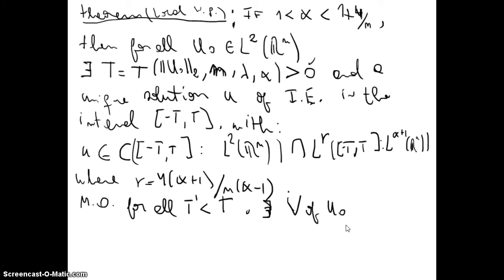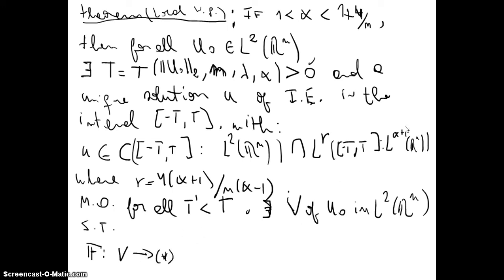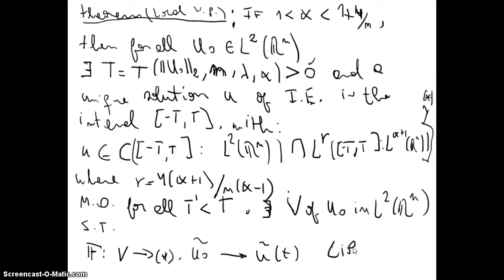Moreover, for all T′ less than T, there exists a neighborhood B of u₀ in L²(ℝⁿ) such that a function f from B to the solution space — which we'll call X* — takes the initial data u₀ and maps it to the corresponding solution. This gives continuous dependence on initial data.